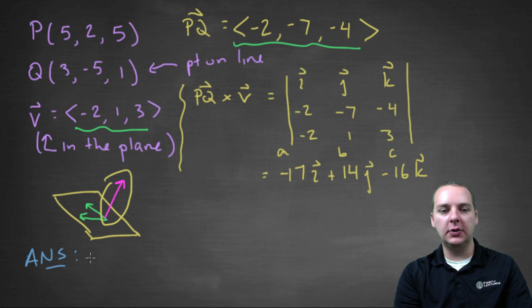So the final answer would be A(X - X_0), which would be -17 times X minus some (X,Y,Z) point that's in the plane. You could take P, or you could take Q, it doesn't really matter. I'll just take (5,2,5).